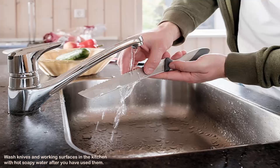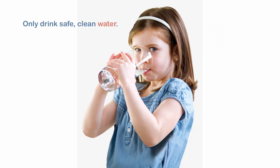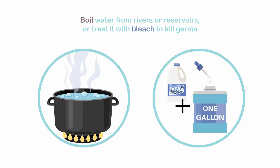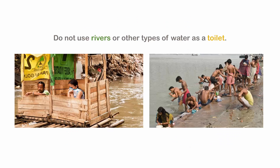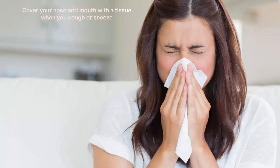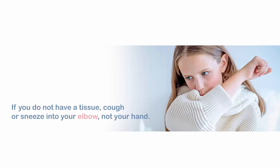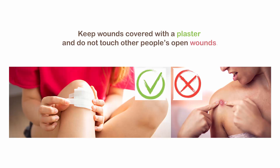Wash knives and working surfaces in the kitchen with hot soapy water after you have used them. Only drink safe, clean water — boil water from rivers or reservoirs, or treat it with bleach to kill germs. Do not use rivers or other types of water as a toilet. Cover your nose and mouth with a tissue when you cough or sneeze; if you do not have a tissue, cough or sneeze into your elbow, not your hand. Keep wounds covered with a plaster and do not touch other people's open wounds.